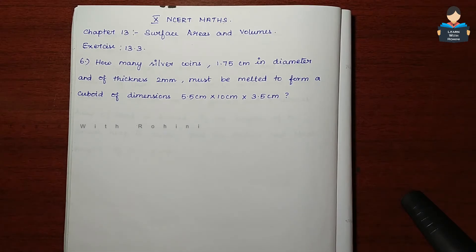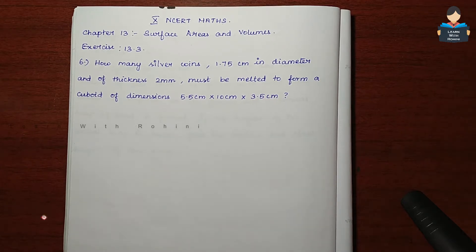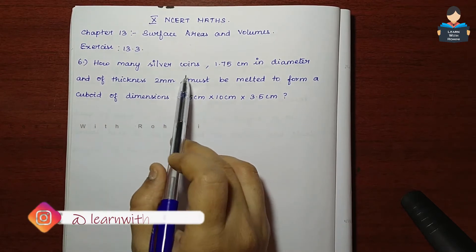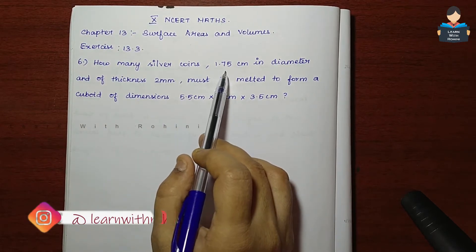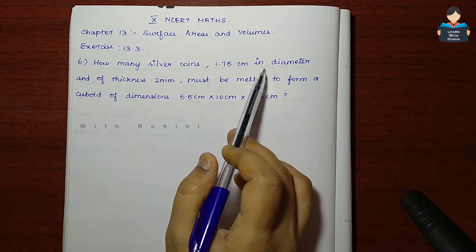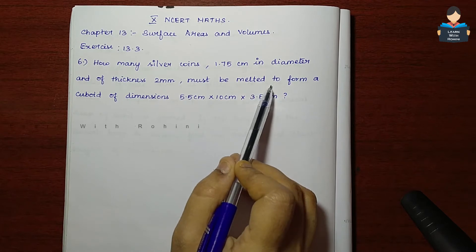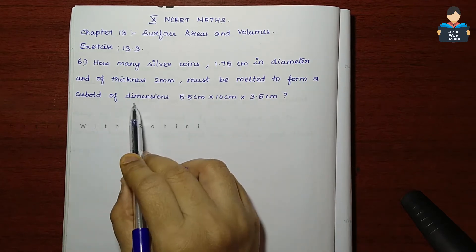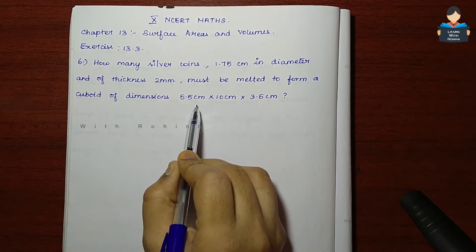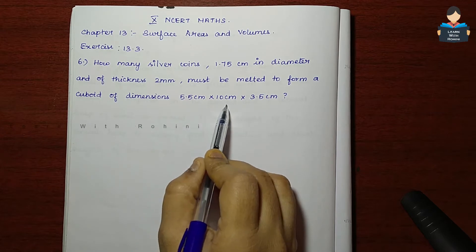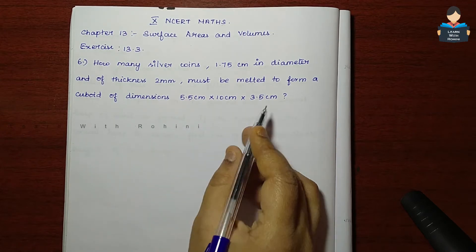Hello everyone, welcome to our channel. In this video, Chapter 13 Surface Areas and Volumes, Exercise 13.3, 6th sum: How many silver coins 1.75 cm in diameter and of thickness 2 mm must be melted to form a cuboid of dimensions 5.5 cm, 10 cm and 3.5 cm?